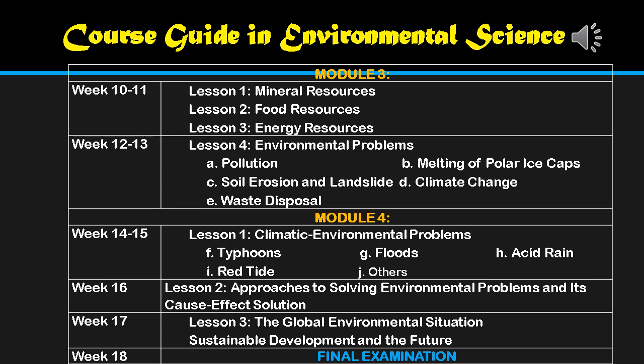For finals, we have Module 3 and Module 4. Module 3 covers mineral resources, food resources, energy resources, and environmental problems such as pollution, melting of polar ice caps, soil erosion, landslide, climate change, and waste disposal. Module 4 covers climatic environmental problems such as typhoons, floods, acid rain, red tide, and others, as well as approaches to solving environmental problems, cost-effect solutions, global environmental situation, and sustainable development. The final examination follows.